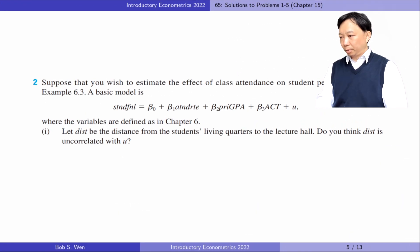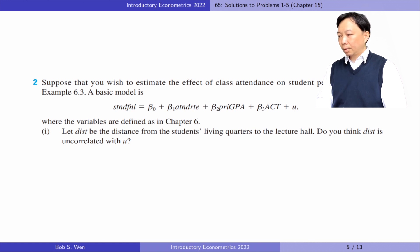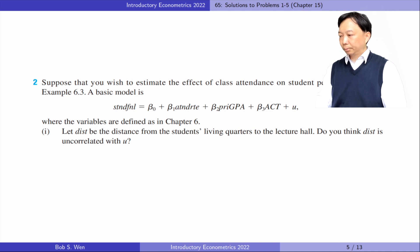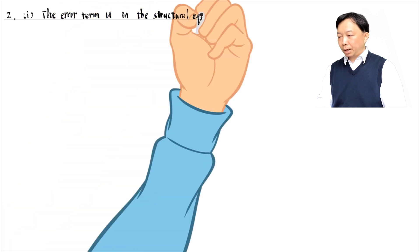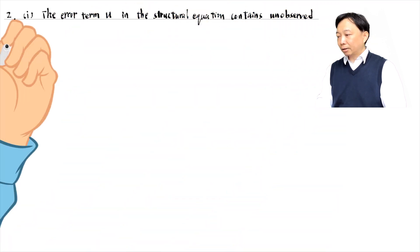Let's solve problem 2. Suppose that you wish to estimate the effect of class attendance on student performance, as in Example 6.3. A basic model is as follows. In part 1, let distance be the distance from the student's living quarters to the lecture hall. The error term in the structural equation contains unobserved factors that affect student performance.